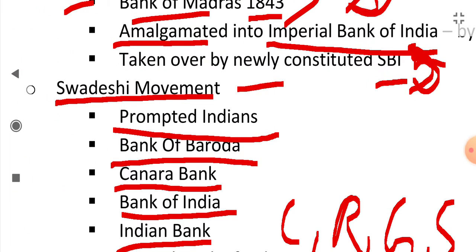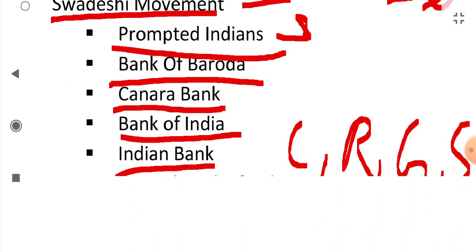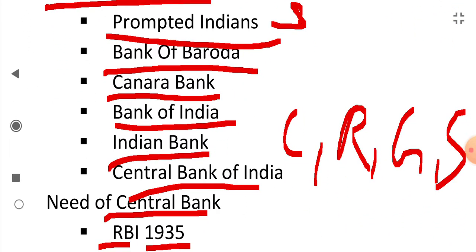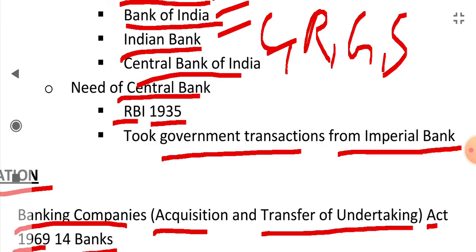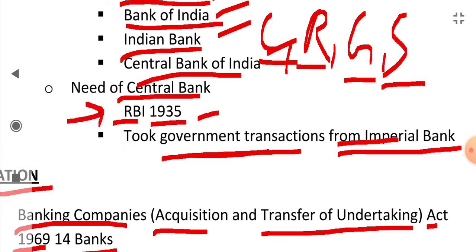The Swadeshi movement prompted Indians to open their own banks — Bank of Baroda, Canara Bank, Bank of India, Indian Bank, and Central Bank of India were established. Then there was a need for a central bank to control, regulate, guide, and supervise all the banks in India, for which the Reserve Bank of India (RBI) was established in 1935, taking over government transactions from the Imperial Bank.